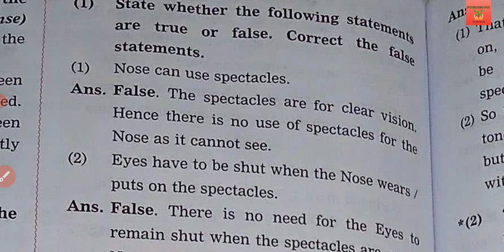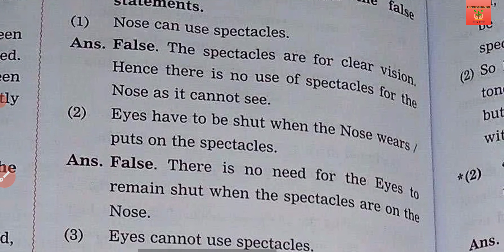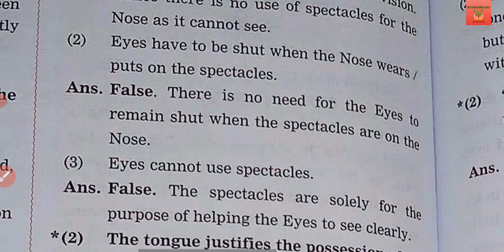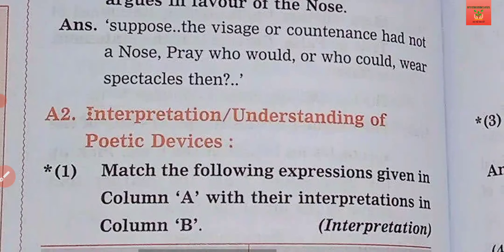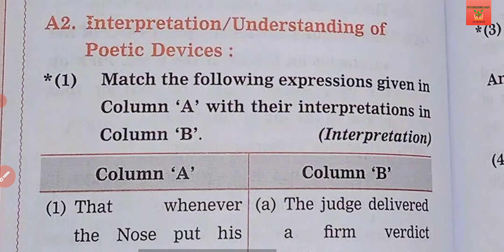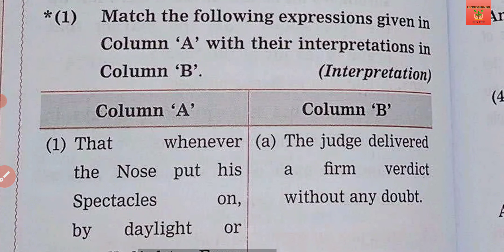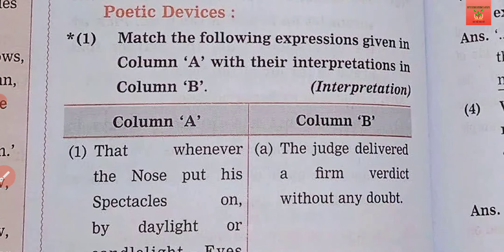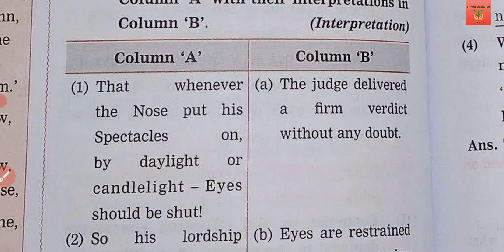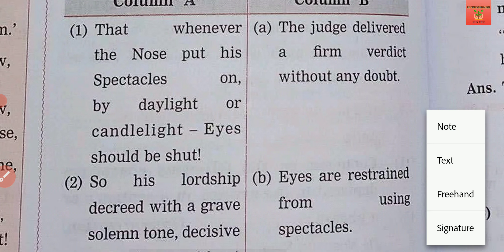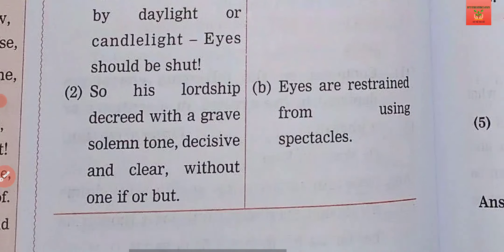Again there is a True or False question, and then an objective-based question. In the poetic devices section, you will see an expression and its interpretation — what the expression means and what it is trying to convey. You have to match the expression with its meaning.